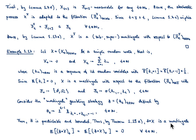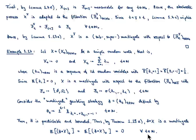By the martingale transforms theorem, the discrete stochastic integral H·X is a martingale. This immediately implies that the expectation of the martingale transform H·X at time t equals the expectation at time 0, which is 0. This holds for any t — meaning that by this gambling strategy, in expectation, you are neither losing nor winning money.